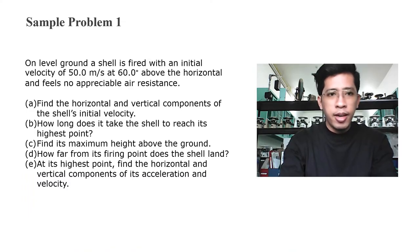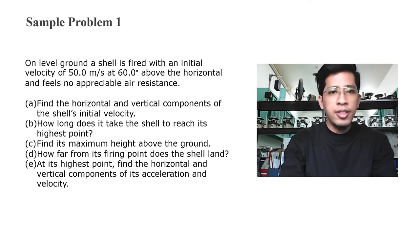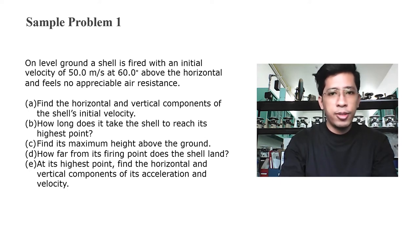For our first problem: on a level ground, a shell is fired with an initial velocity of 50 meters per second, 60 degrees above the horizontal, and feels no appreciable air resistance. We are asked to find: the horizontal and vertical components of the shell's initial velocity; how long it takes the shell to reach its highest point; the maximum height above the ground; how far from its firing point the shell lands; and at its highest point, the horizontal and vertical components of its acceleration and velocity. Let us solve the problem one by one.